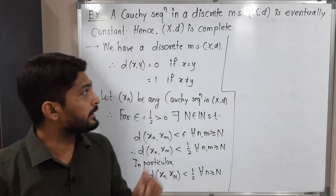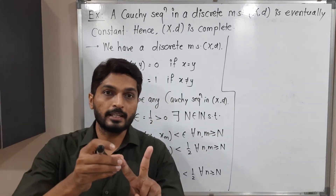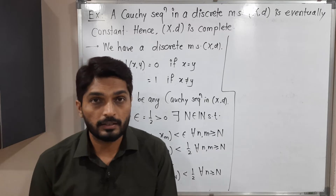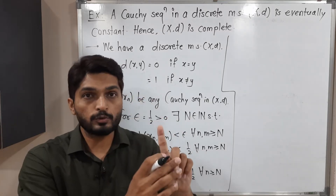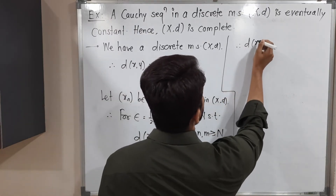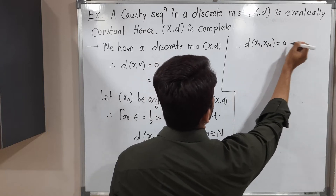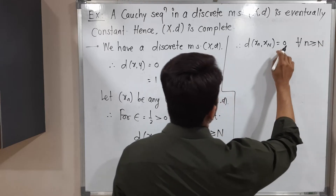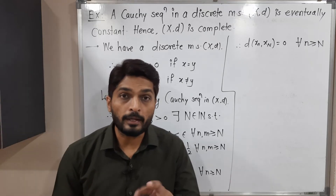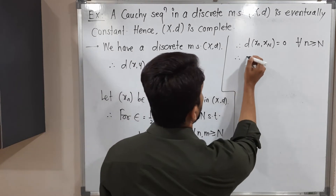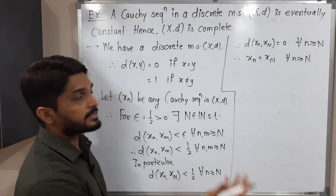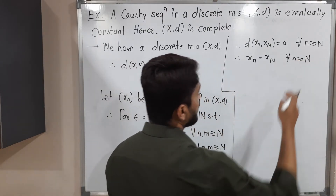In a discrete metric space we have just two distances: 0 and 1. Here we are saying the distance between x_n and x_N is less than 1/2. Since the distance is less than 1/2, you cannot take 1, so the distance must be 0 — this is the only option in a discrete metric. Therefore the distance must be 0. And when do we get distance 0? If both points are same — distance 0 means the points are equal — for all n ≥ N.